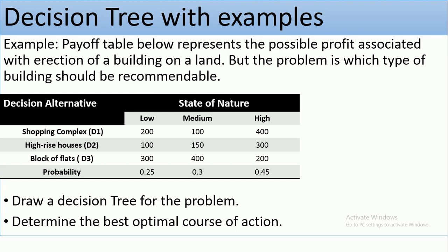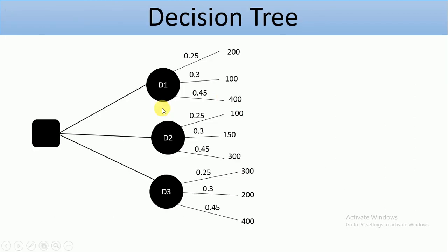So for D1, the first branch takes 200 payoff value, which is under the 0.25 probability estimate; 100 for medium, which is under 0.3 probability estimate; and 400 for high, which is under 0.45 probability estimate. And that's what we have here under D1. We apply the same thing under D2, and we apply the same thing under D3.